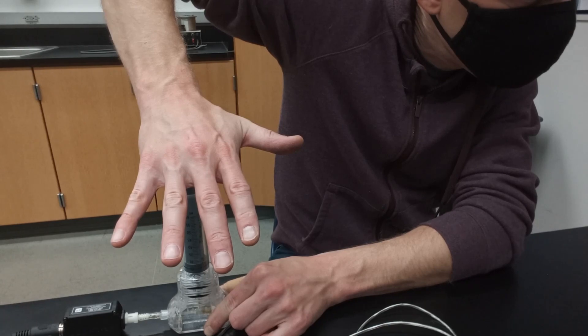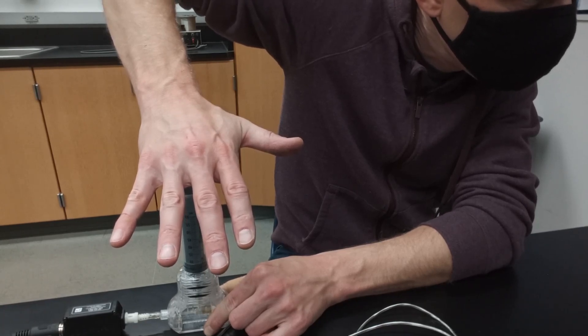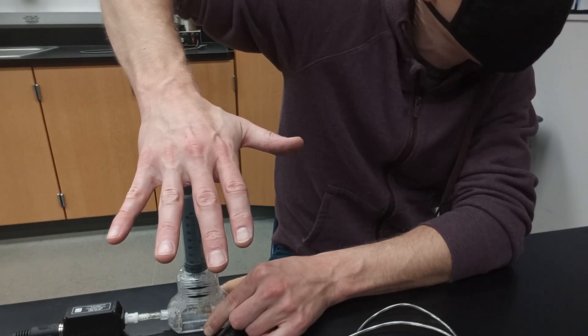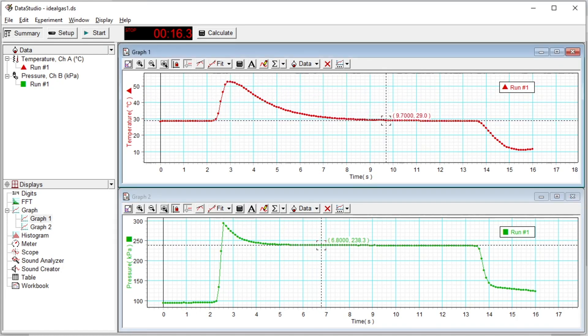Finally we study a process that occurs at constant volume. This happens after we compress the gas adiabatically and hold the plunger down. The gas is initially at a higher temperature and then slowly equalizes with the temperature of the air in the room, while the pressure changes accordingly.